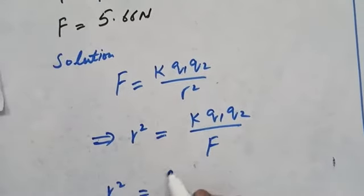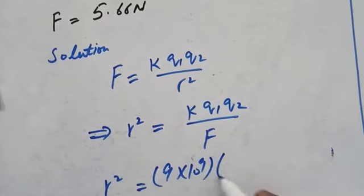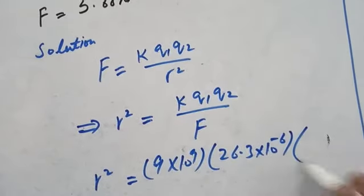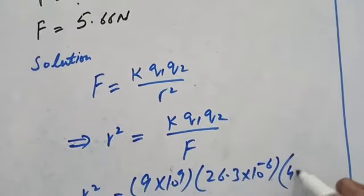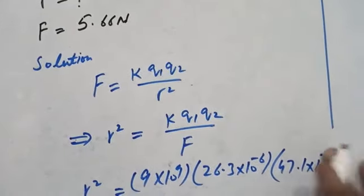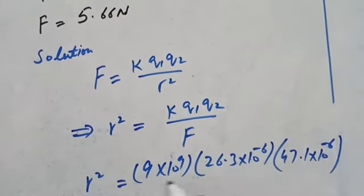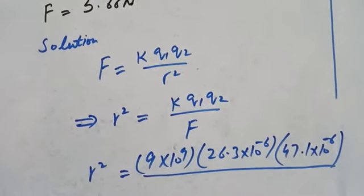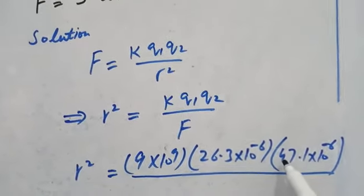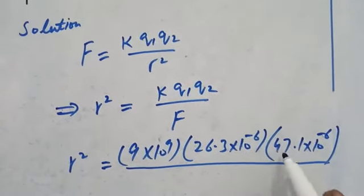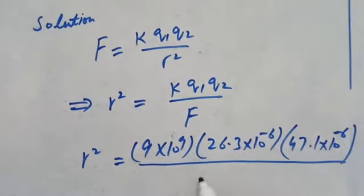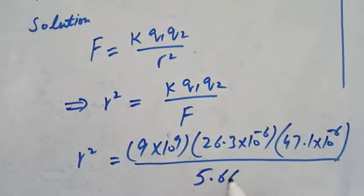Putting values: K is 9 × 10⁹, Q1 is 26.3 × 10⁻⁶ coulombs, and Q2 is 47.1 × 10⁻⁶ coulombs. When calculating the magnitude of distance, we ignore the sign of charges and put numerical values irrespective of their signs in this expression. Force F is 5.66 newtons.